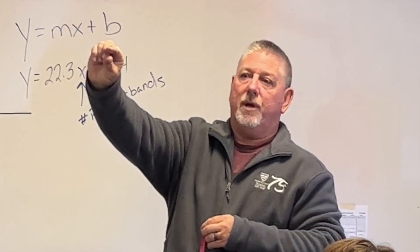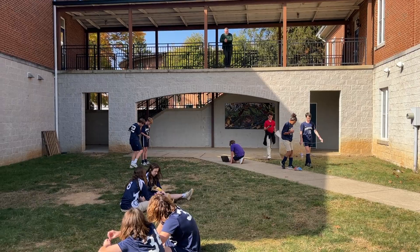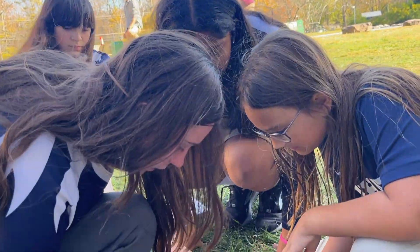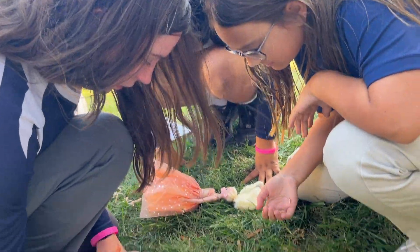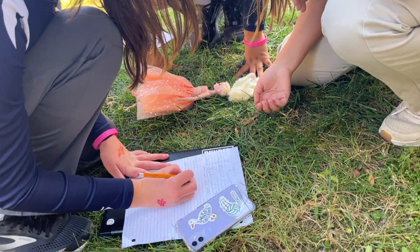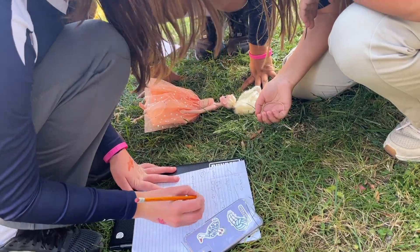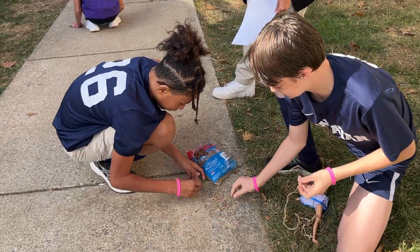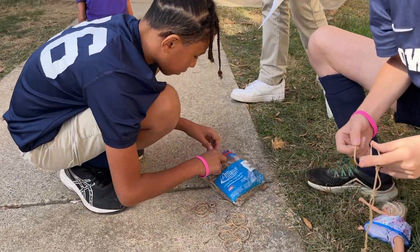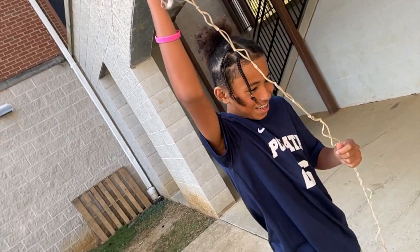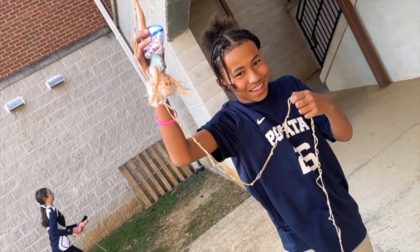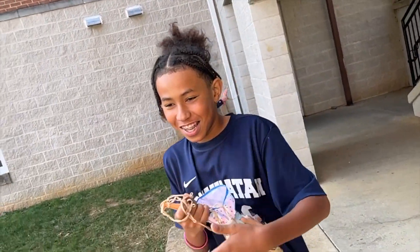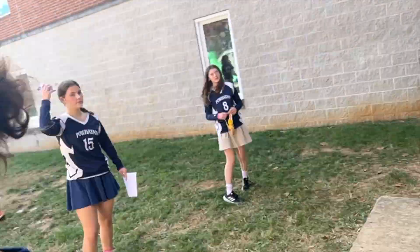We then took our Barbies out and I told them we were going to drop them — I believe it was 14 feet 11 inches. They had to put that information into their linear regression to see how good their model was. We tied those rubber bands up and let Barbie bungee off the second floor of our walkway.